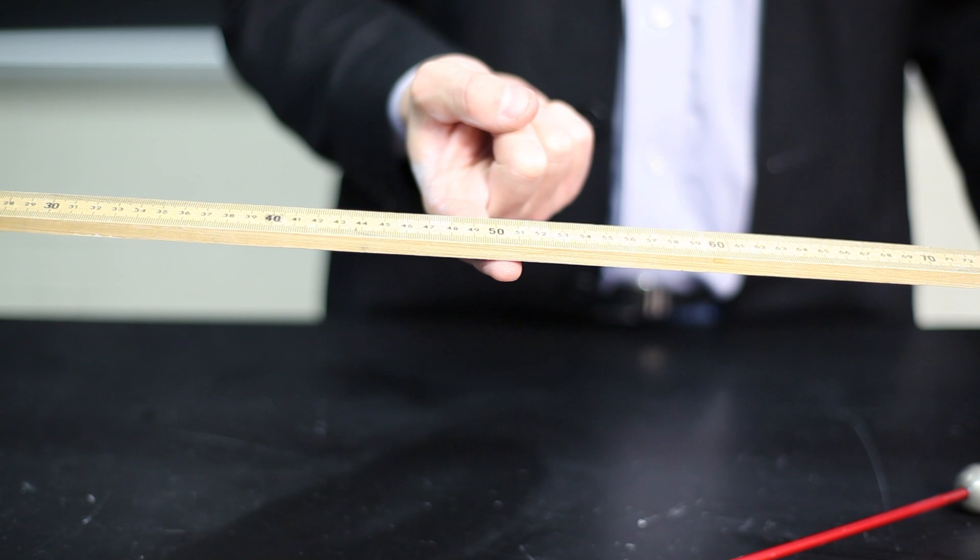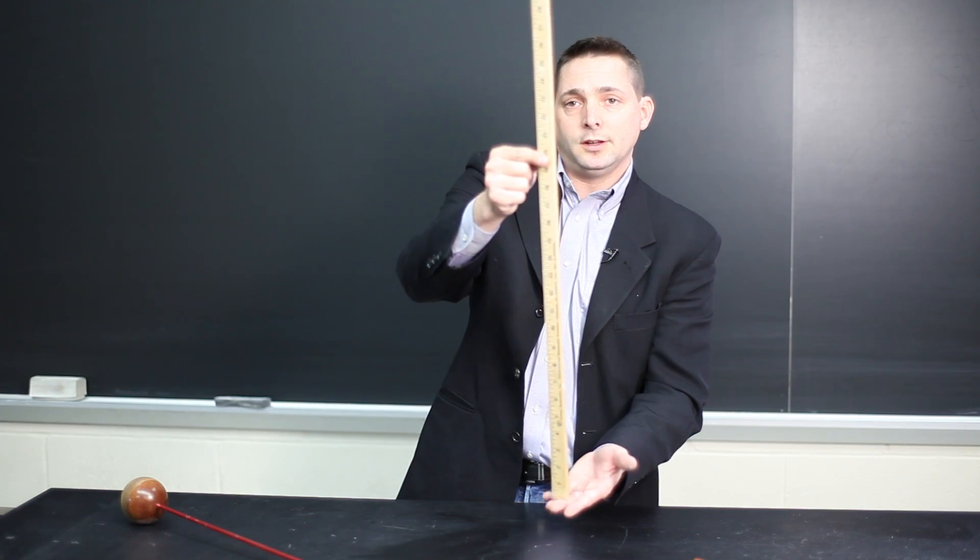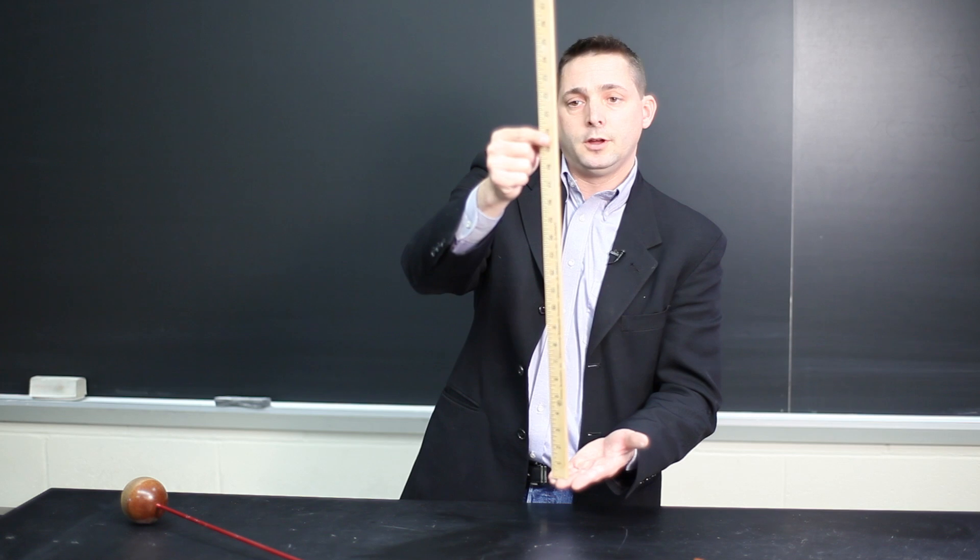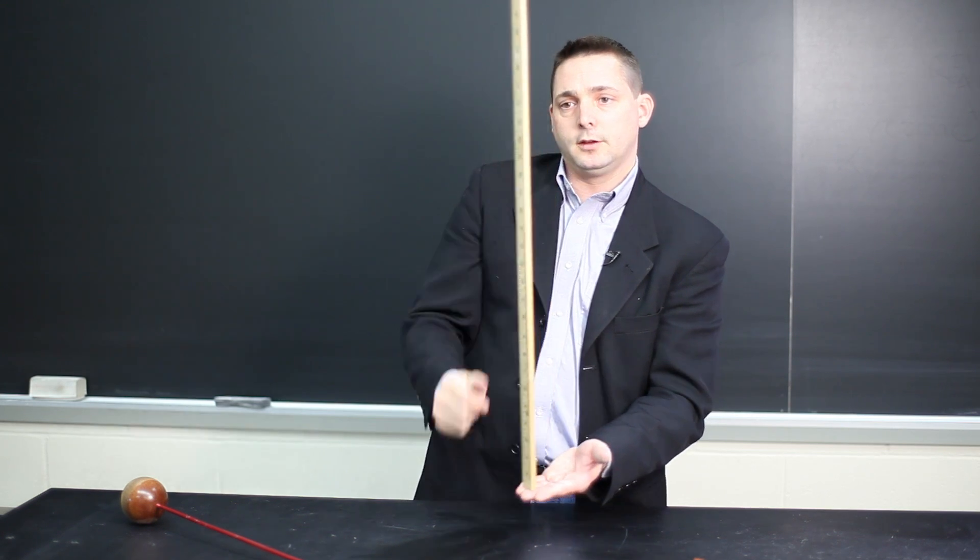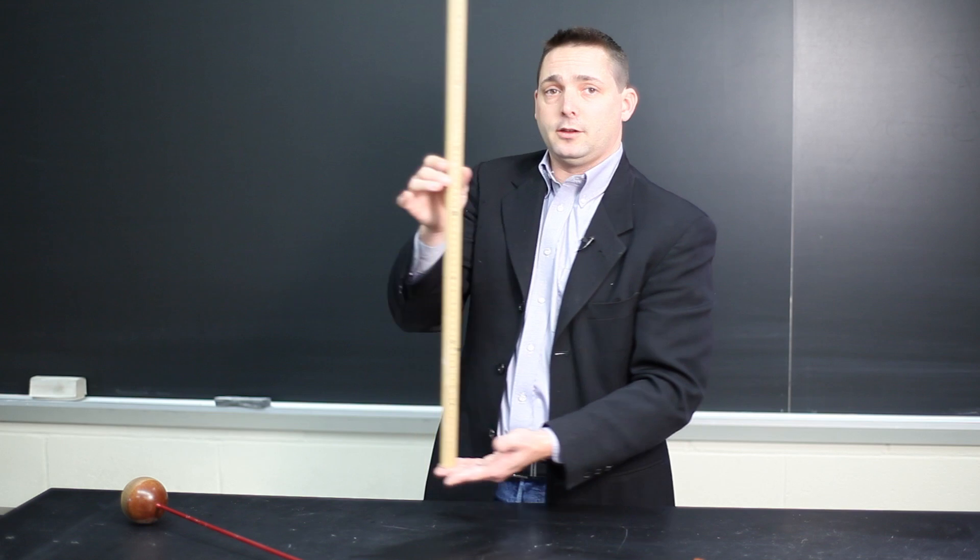If I hold it on an end, such that the center of mass is higher than the lowest point, we reach an unstable balancing, which requires a little bit of work to keep it balanced.